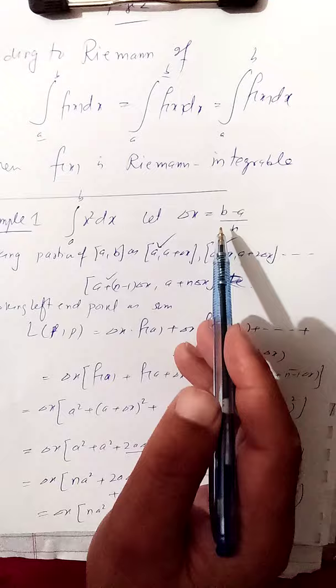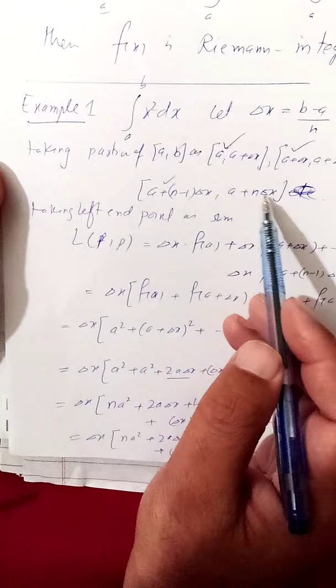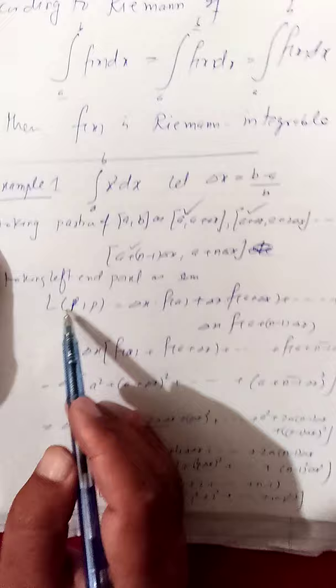Now we calculate the integral from a to b of x² dx. Let delta x equal b minus a divided by n, taking a partition of the interval [a, b] as: a, a plus delta x, a plus 2 delta x, and so on up to a plus n delta x. Taking the left endpoint of each sub-interval, we get: delta x times f(a), delta x times f(a plus delta x), and so on plus delta x times f(a plus (n−1) delta x).